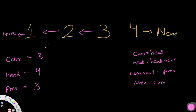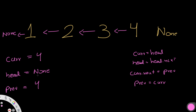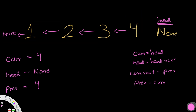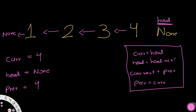Fourth iteration: current becomes four, the value of head. Head moves to the next node, which is none. The previous node was three, so we point current.next — four — to three. Four now points to three instead of none. Then we update previous to be equal to current, which is four. We stop here because head has a value of none, meaning we've reversed all elements. Our final result is four points to three, three to two, two to one, and one to none.